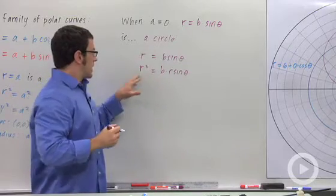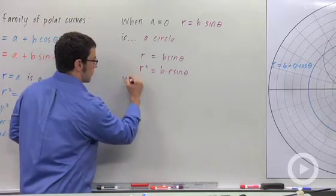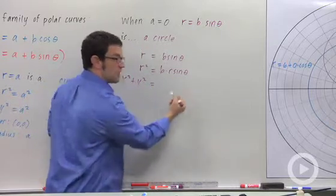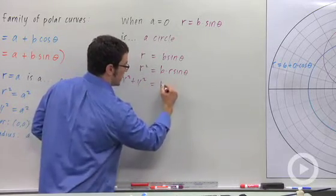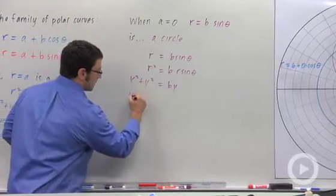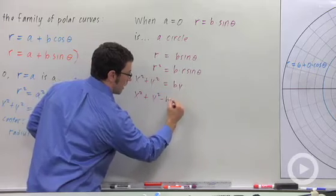Now converting back to rectangular, r squared again becomes x squared plus y squared, and this becomes b times r sine theta which is y. So b times y, and I'll collect all the terms on the left: x squared plus y squared minus b y.